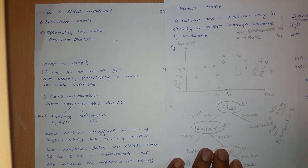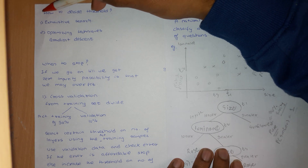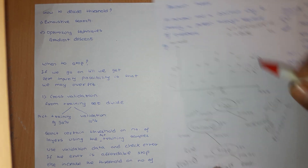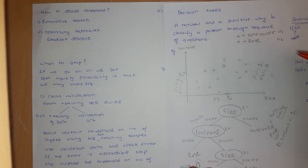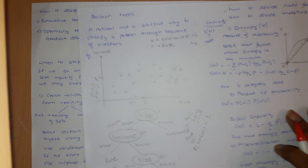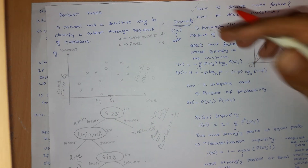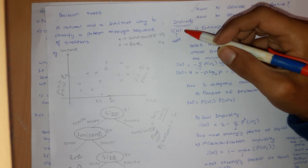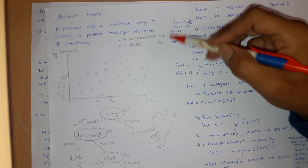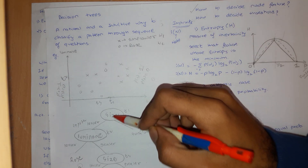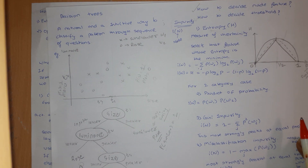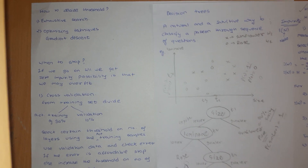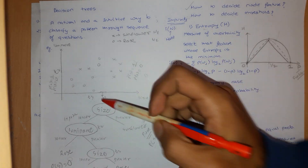Hello guys, welcome back. In this video we are going to answer the question: how to decide the threshold. In the previous video we had seen how you can decide the node feature using entropy or impurity or classification — basically finding a measure of impurity. Impurity is given by I of N, where N is the node you are looking at. We saw these different types of entropies, and now one can ask how to decide the threshold.